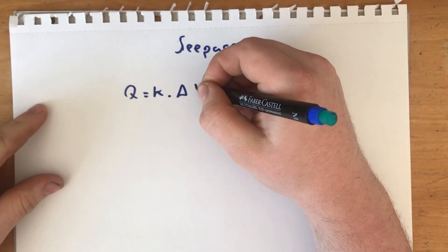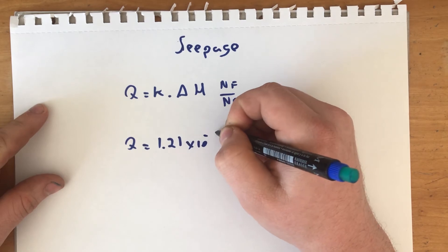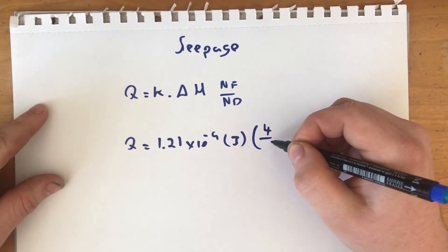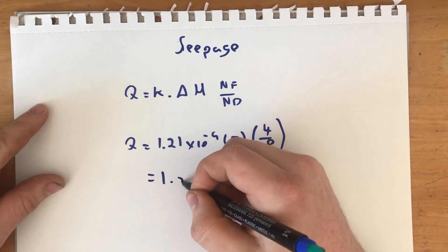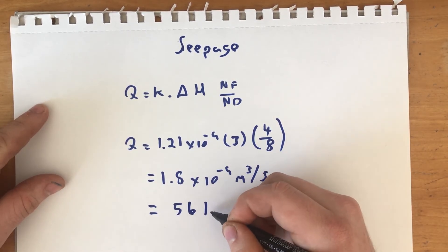Seepage through the dam can be calculated by the following formula: permeability times change in total head times number of flow channels divided by the number of drops. After we did this, we calculated the seepage to be 56 litres per year.